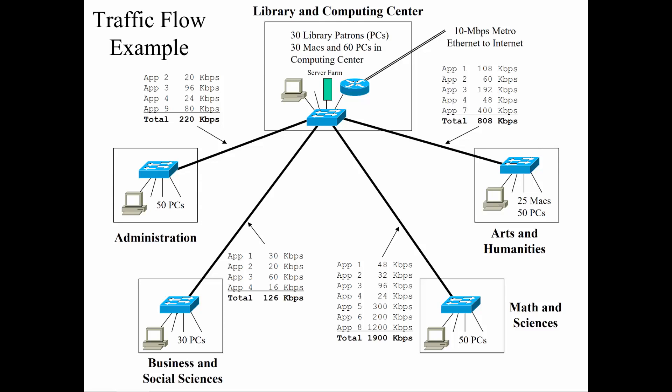Understanding how to design a CAN — campus area network — what buildings, what applications are being run in the building, how much bandwidth they're going to need. Bandwidth totals aren't going to be in the kilobits, but the same principle applies.